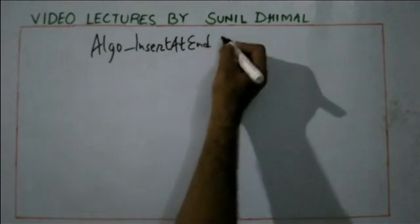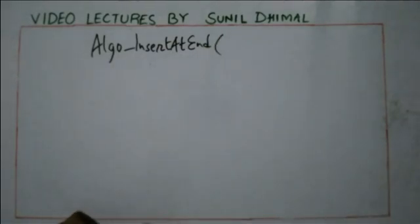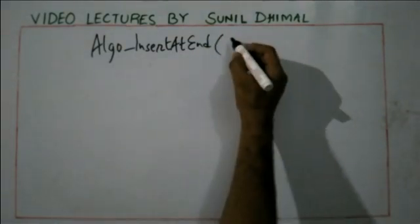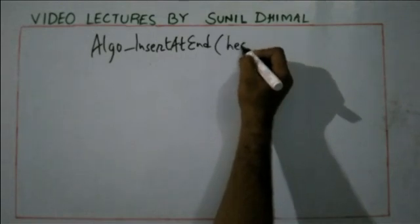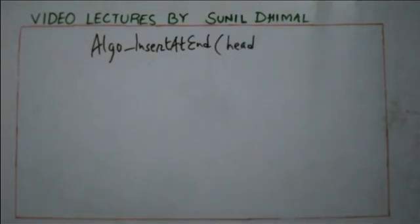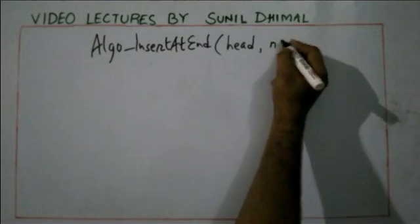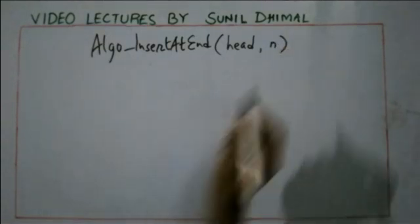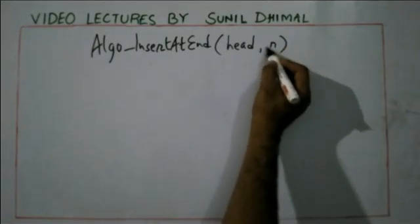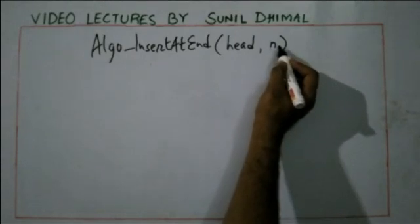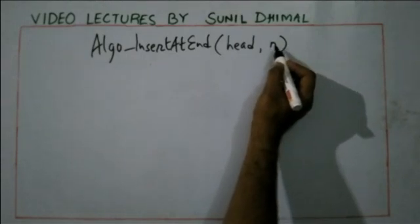Insert at end. For this algorithm, I am assuming that you are given the head pointer — the pointer that is pointing to the head of the linked list or the start of the linked list — and the element to be inserted in the linked list. I need to insert this element, number N, at the end of the linked list.